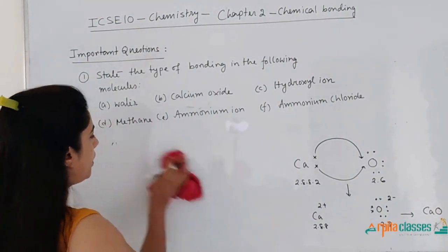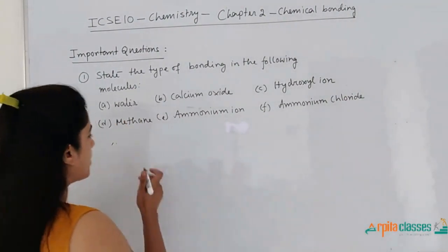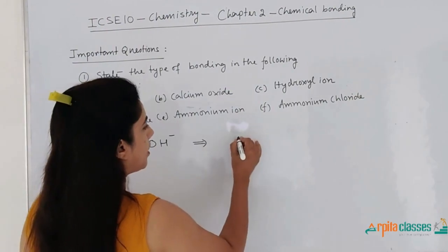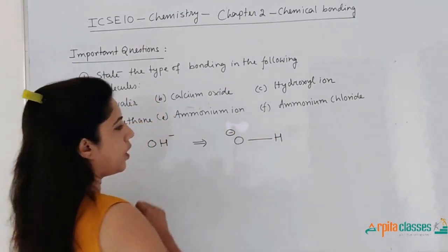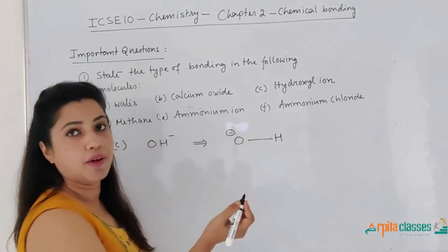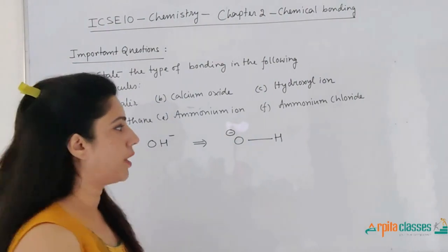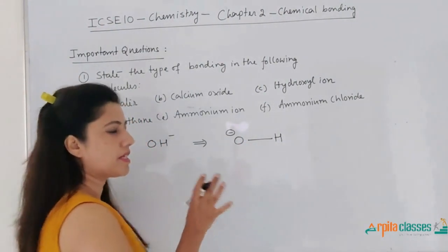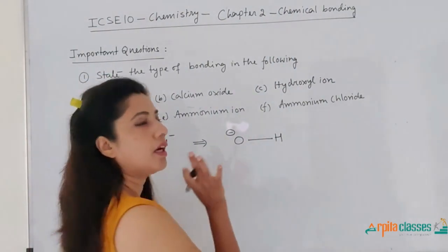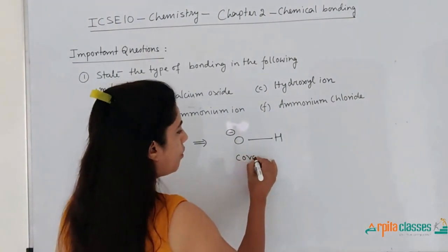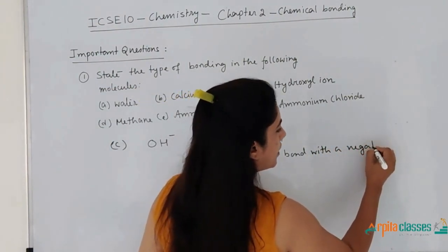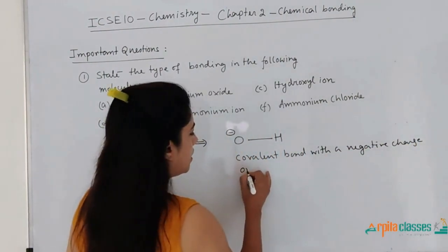The next molecule is hydroxyl ion. The structure of hydroxyl ion is OH⁻. If we draw it properly, it will be OH with a minus sign on the oxygen atom. There is a single covalent bond, simply because oxygen and hydrogen are both non-metals and there is hardly any electronegativity difference. They go for covalent bond because hydrogen cannot afford to lose its one electron — it has to get duplet configuration. So it is a covalent bond with a negative charge on the oxygen atom.